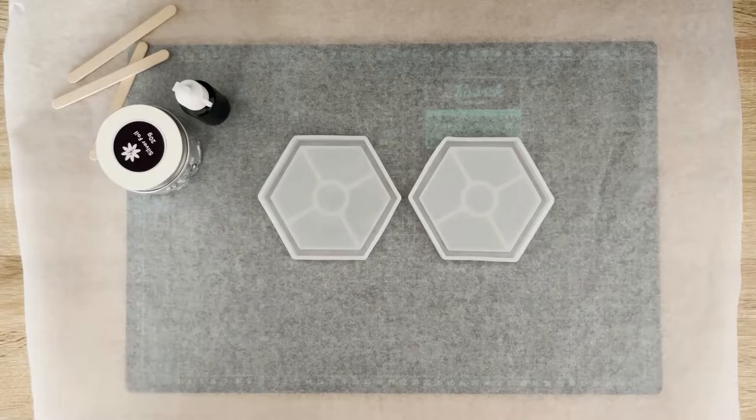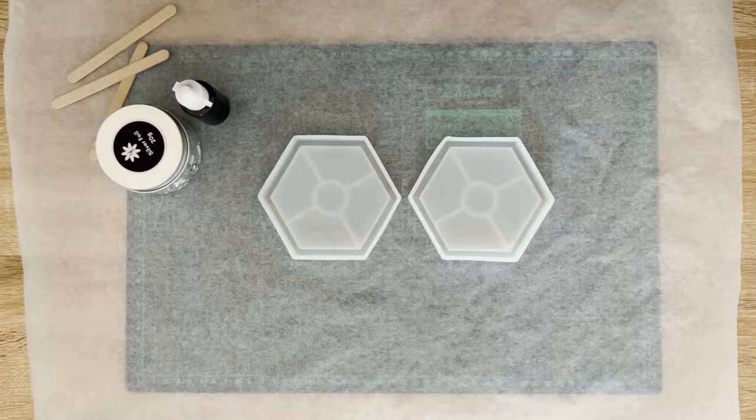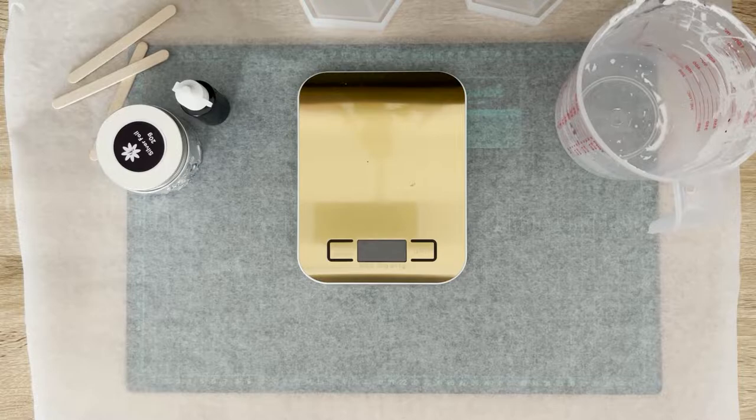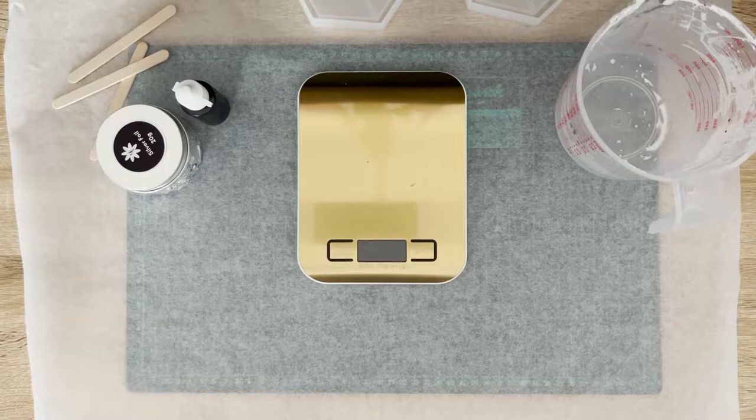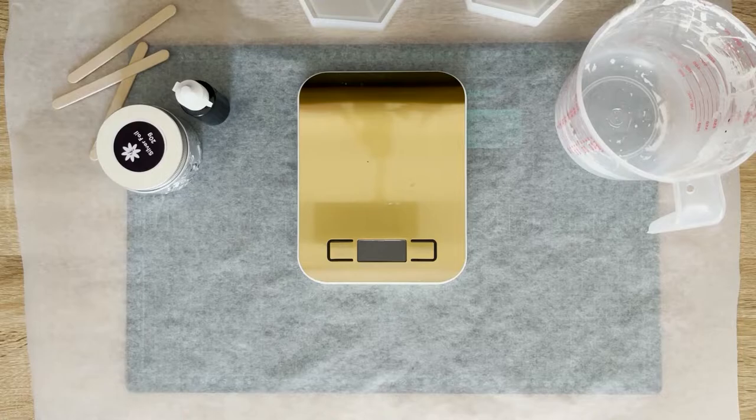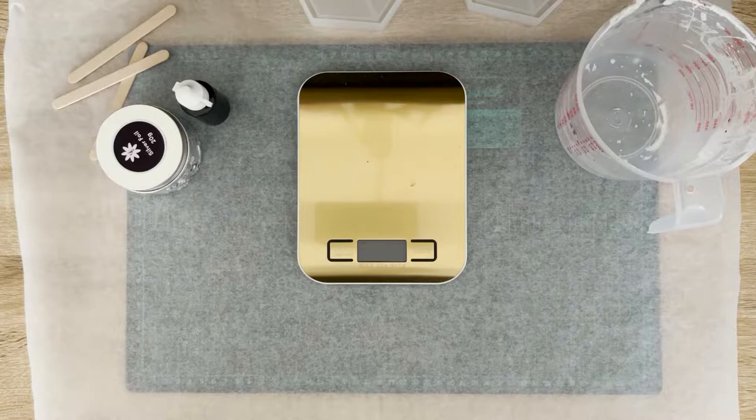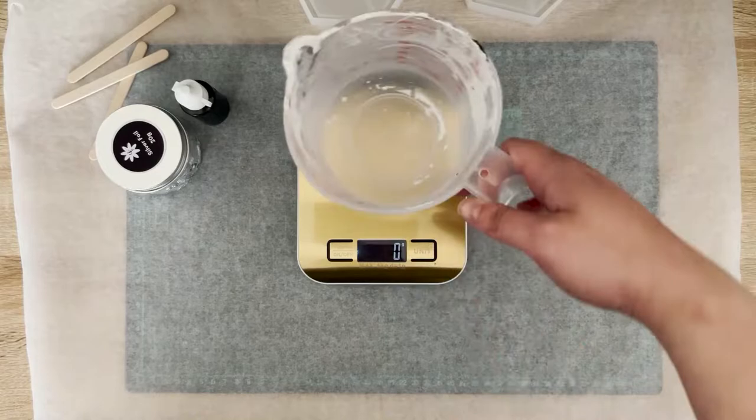When you're working with jesmonite, you don't have a lot of time before it sets. It typically takes about 30 to 40 minutes to set. I'm using an alternative to jesmonite. I am not using AC 100 or the jesmonite that is manufactured in the UK. I use acrylic resin and jesmonite interchangeably, but they pretty much mean the same thing. I got my acrylic resin from Bijou Accessories. If you're in South Africa, you can check out her Facebook page.